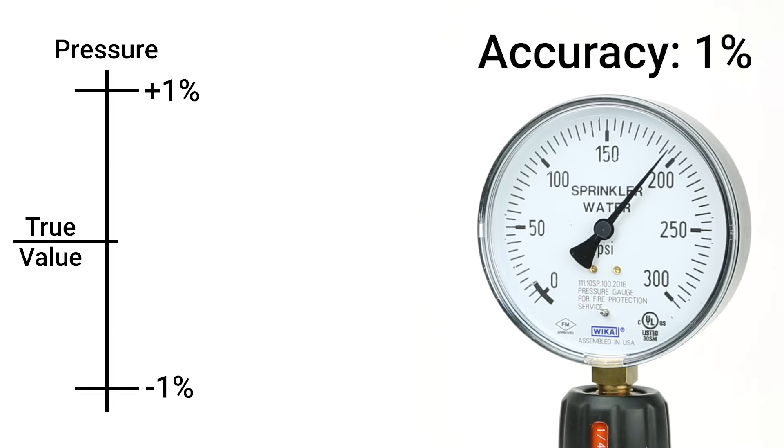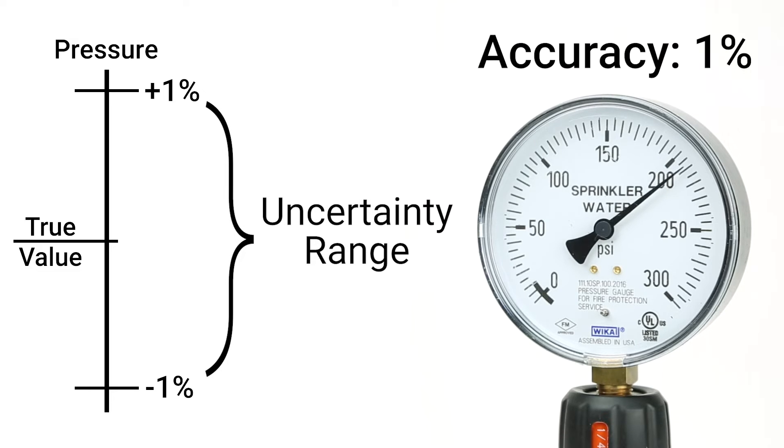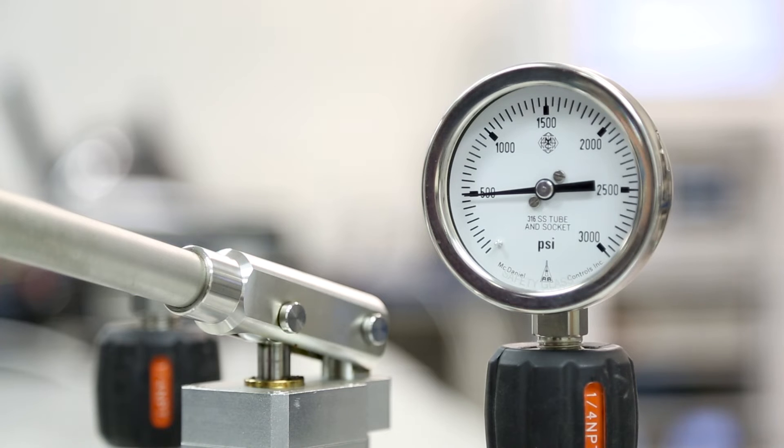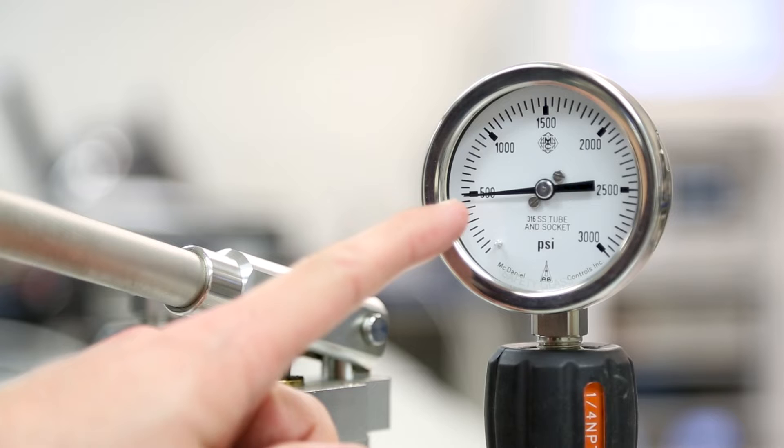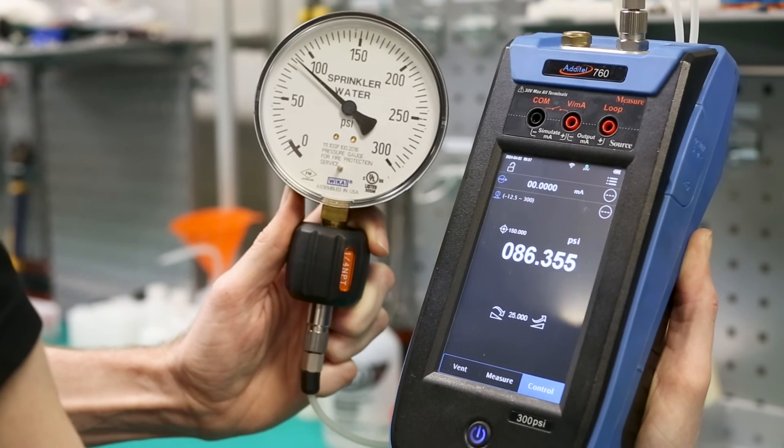So while the specified accuracy of a device is technically an uncertainty range, it does not always account for the full uncertainty of a measurement. A simple way to think about it is that accuracy is usually used in measurement, while uncertainty is usually used in calibration.